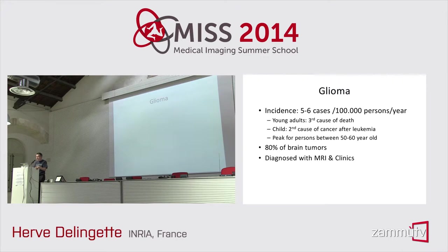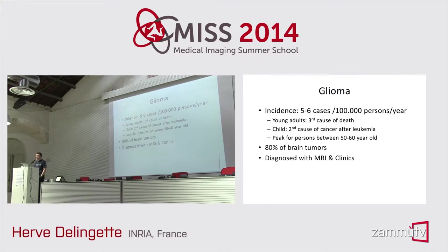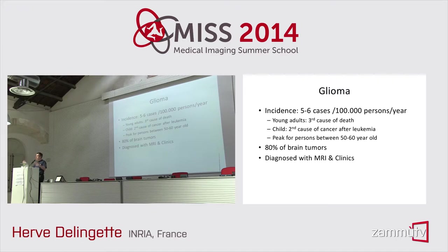That was my general introduction on biophysical modeling. Now I will focus on brain tumors — specifically a kind called gliomas. Gliomas are the main brain tumors: 80% of brain tumors are gliomas, with an incidence of about 5 to 6 cases per 1,000 persons per year. For young adults, gliomas are considered the third cause of death, and for children the second cause of cancer after leukemia. The occurrence peaks in persons between 50 and 60 years old. Diagnosis is based on MRI and clinical symptoms.